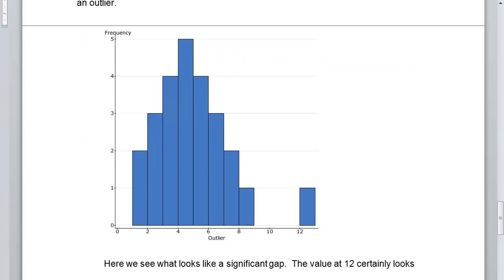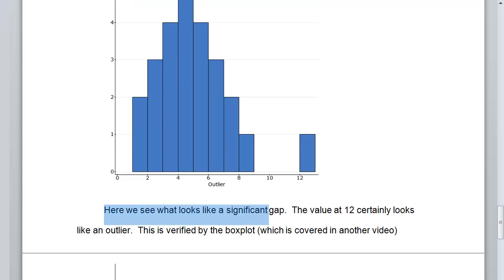However, here, I have this clear trend up. I have this clear trend down. It looks like it should zero out, but I've got this one value of 12 over here. And this is a fairly significant gap. That's not just a little space. That's a big space. So here we see what looks like a significant gap. And so the value at 12 certainly looks like an outlier.